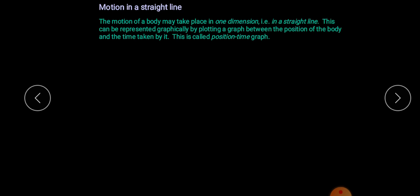Now, motion in a straight line. When objects move, the simplest idea is to move in a straight line. This type of motion is called rectilinear motion. The motion of a body may take place in one dimension — that is, in a straight line. This can be represented graphically by plotting a graph between the position of the body and the time taken by it. This is called a position-time graph.